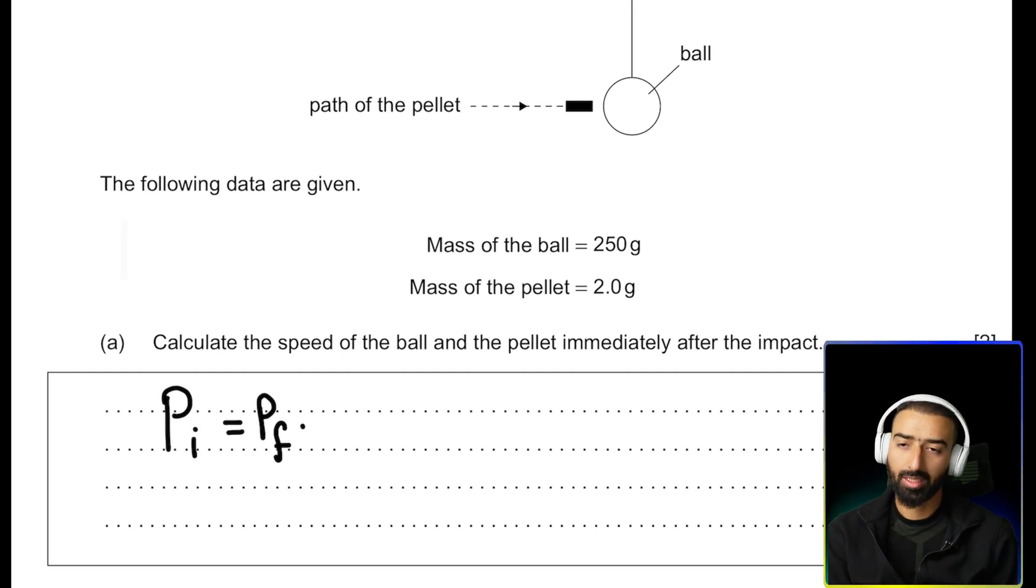Okay, well what's the initial momentum of our system? Well, the initial momentum of our system is simply mass of the pellet times velocity of the pellet. The ball doesn't contribute anything to the initial momentum because it's at rest. All right, so we got the initial momentum and the final momentum can be written as mass of pellet plus mass of ball times v.